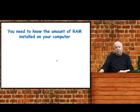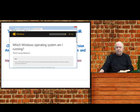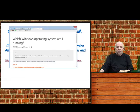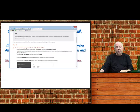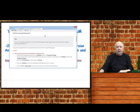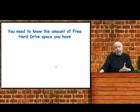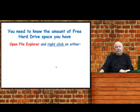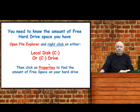You need to know the amount of RAM installed on your computer — I've got a link here that you can click on, and it'll take you to a Microsoft site that tells you what operating system you're running. If you scroll down, it's got four different links depending on the operating system, and clicking a link will give you the description on how to find out how much memory you have. You also need to know how much free hard drive space you have — just open File Explorer and right-click on local disk C, then click properties, and it should give you the amount of free space.